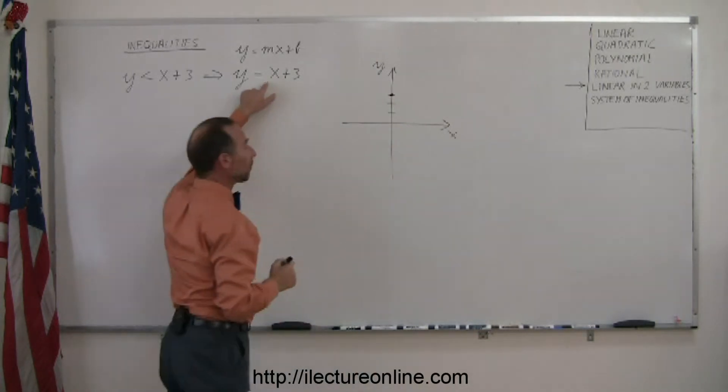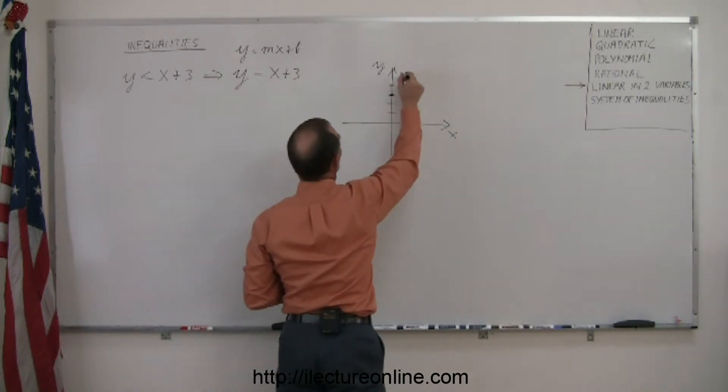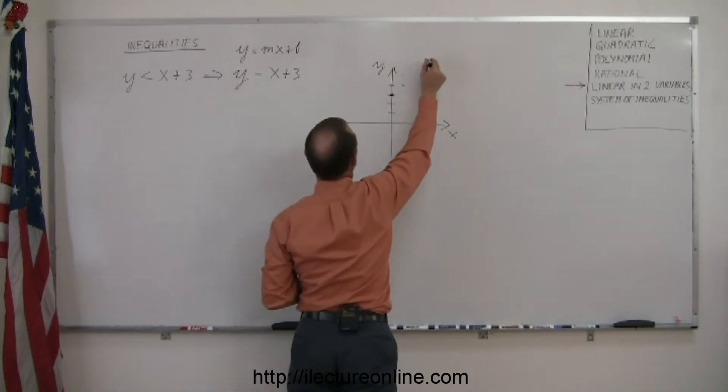And since the slope is a positive 1, that means you have a rise of 1 and a run of 1. So when you go up 1, you go over 1, repeating to plot the points on that line.